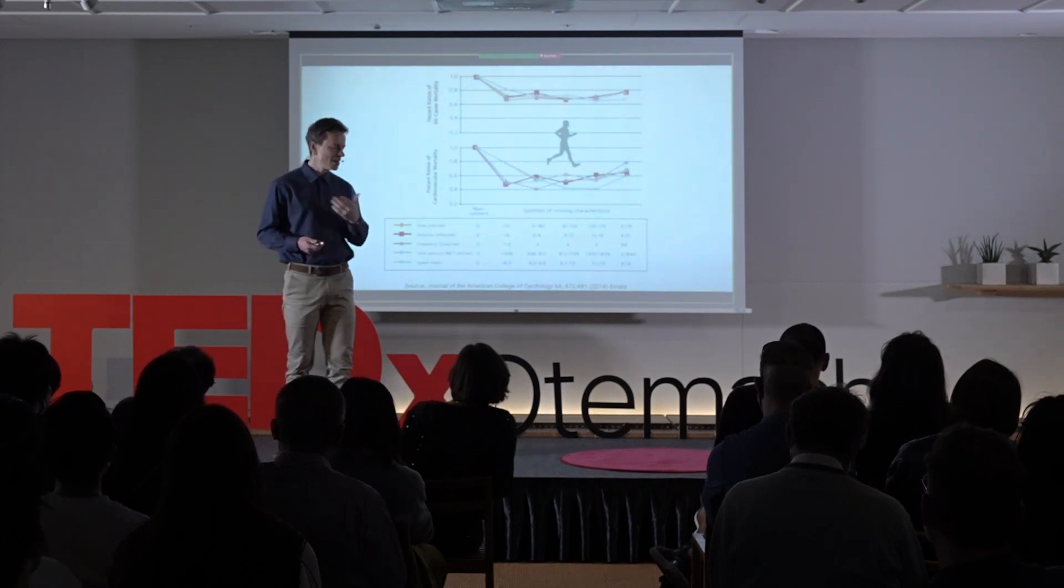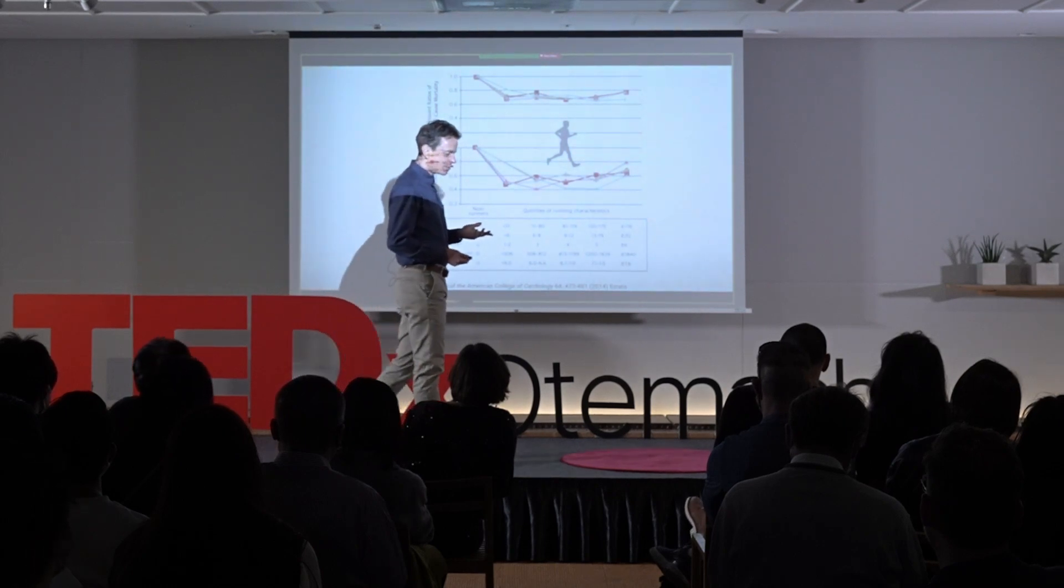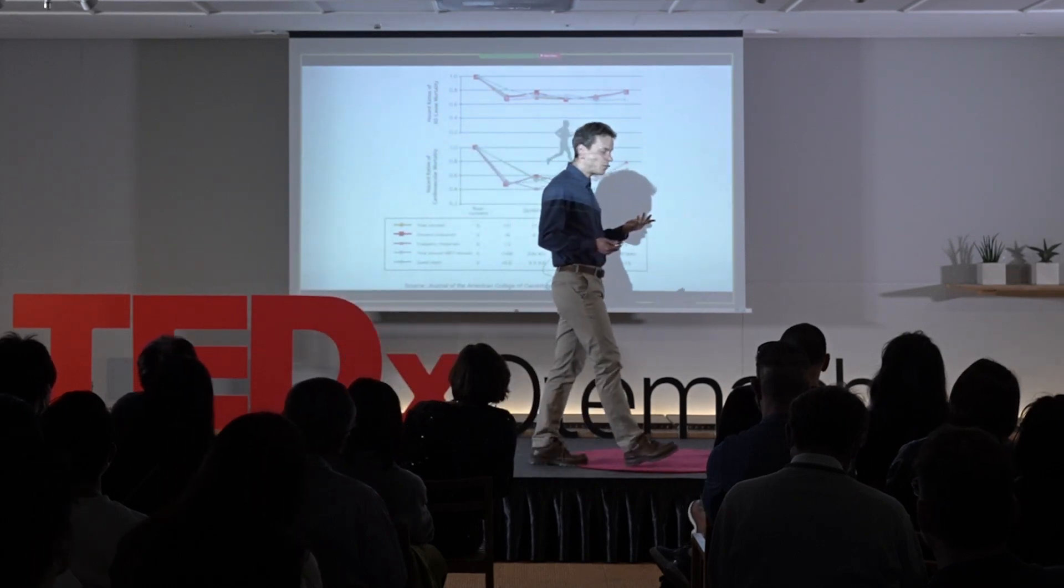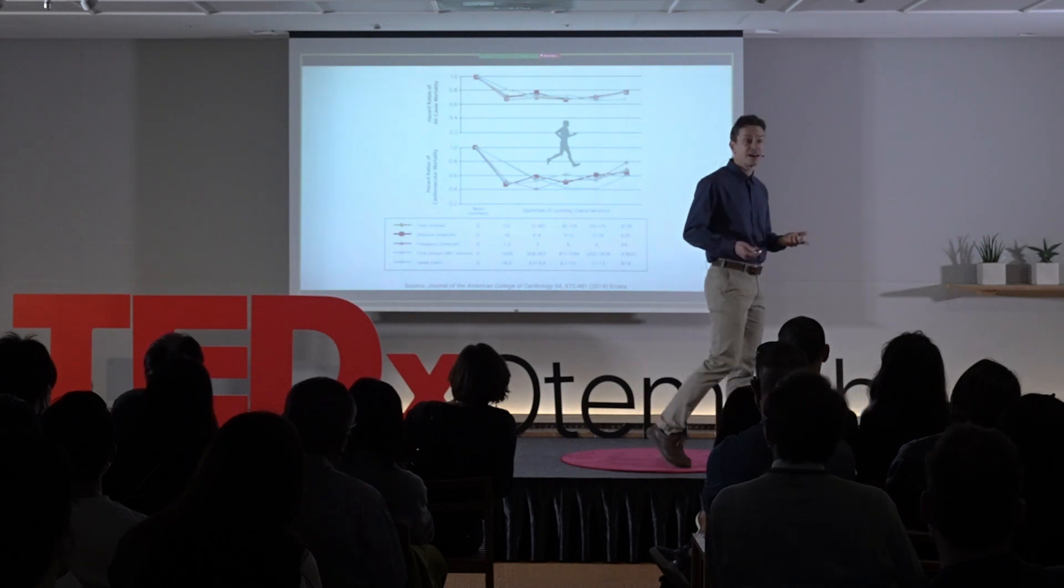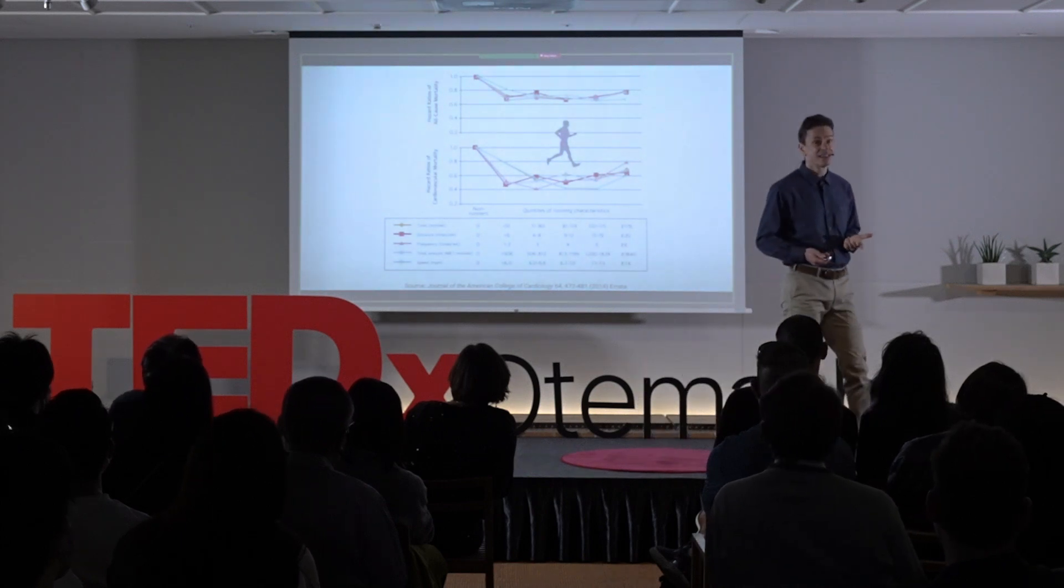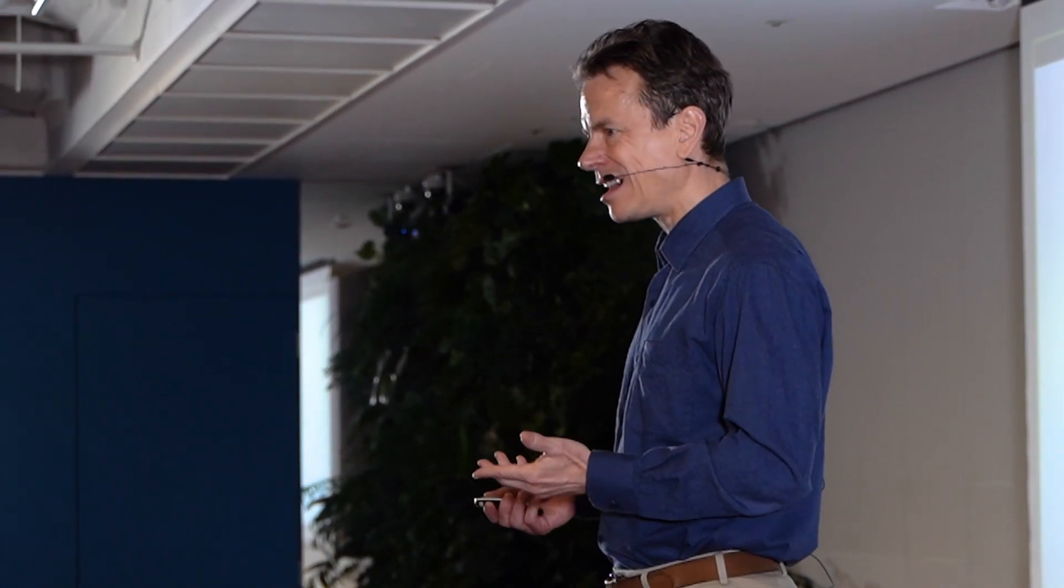But these people are running in the first group or the second group only once or twice a week for under an hour, 51 minutes actually. And they're getting just as much benefit as people who are running several hours a week, five times a week, at high speeds.